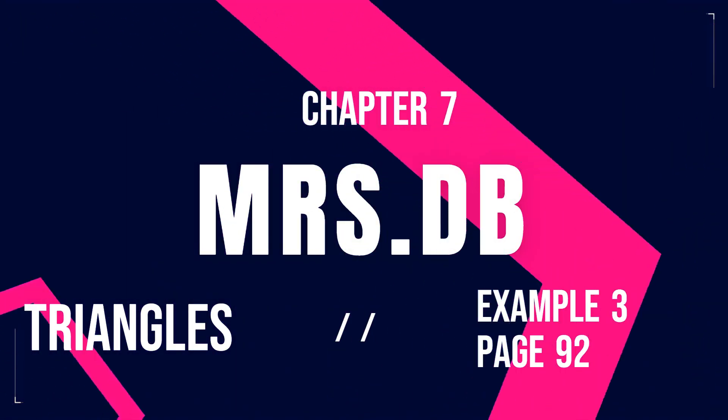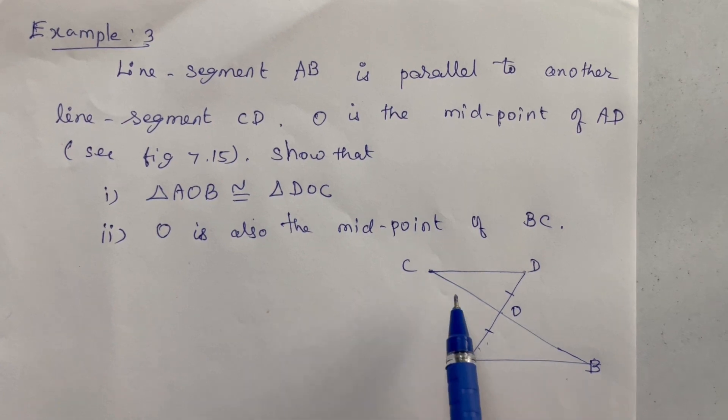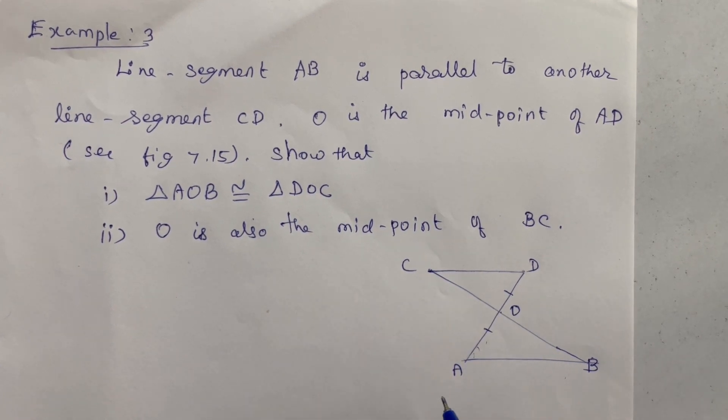Thank you for sending your doubts. Example 3. Line segment AB is parallel to another line segment CD. O is the midpoint of AD.